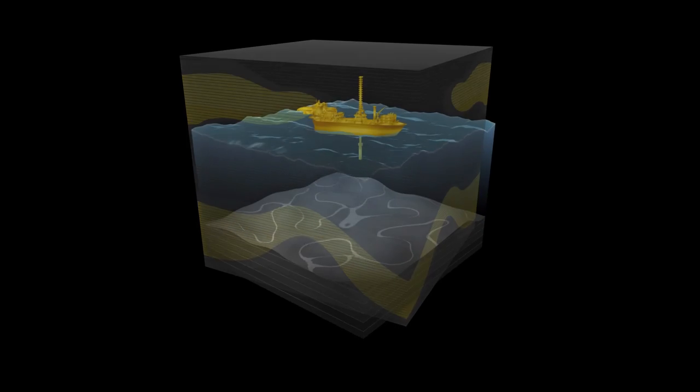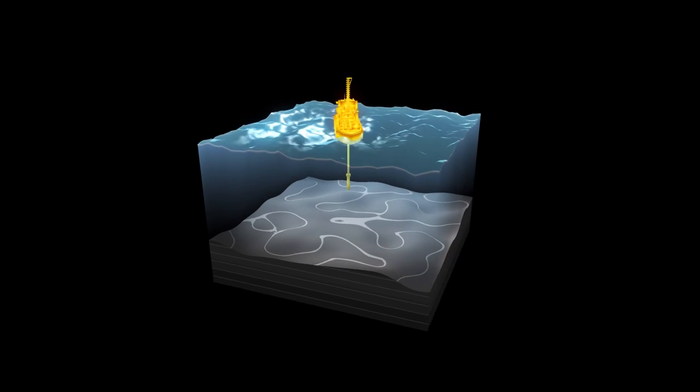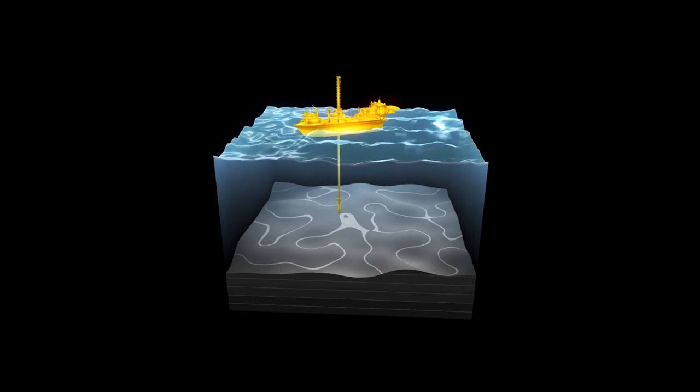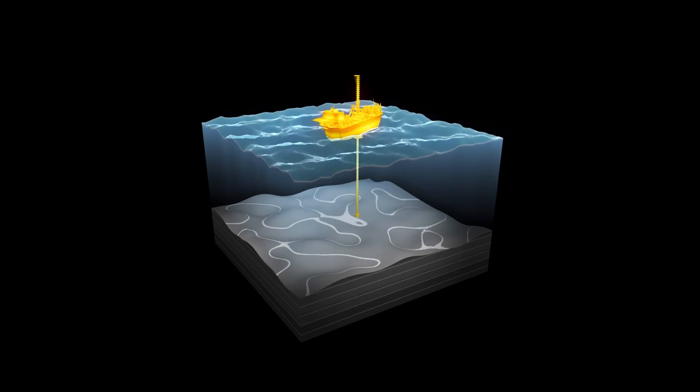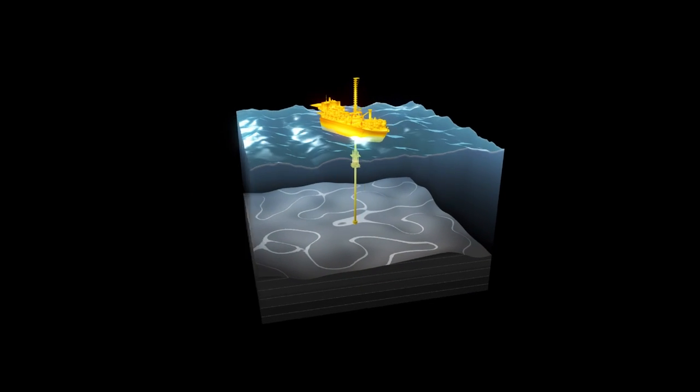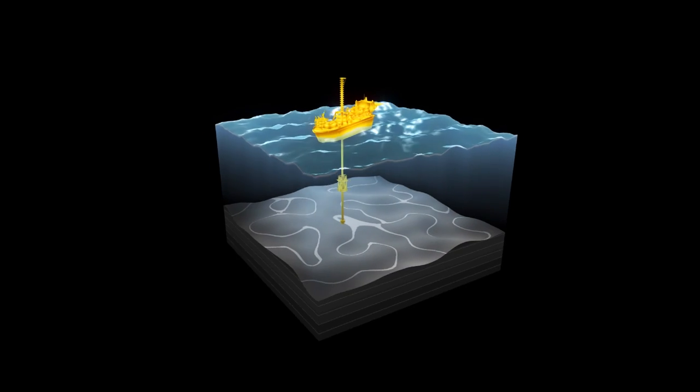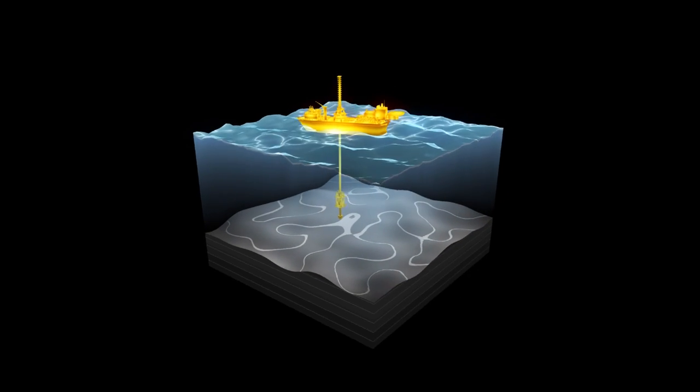Also, drilling rigs have come a long way. Shell is collaborating with drilling contractors to deliver a new generation of drilling rigs like the Bully Drill Ships. These are shorter, lighter, feature advanced on-board automation and safety systems and consume less fuel.